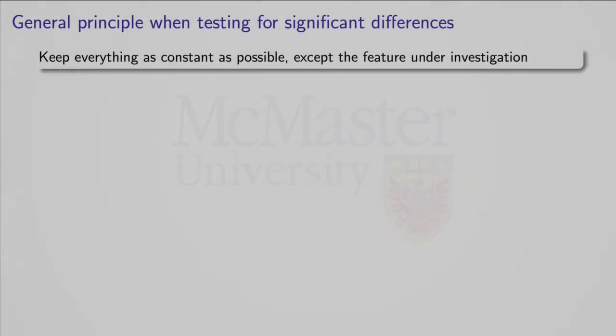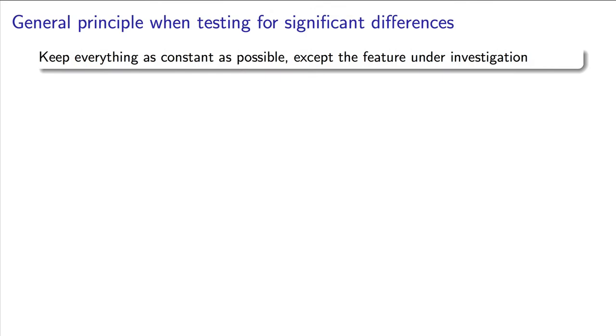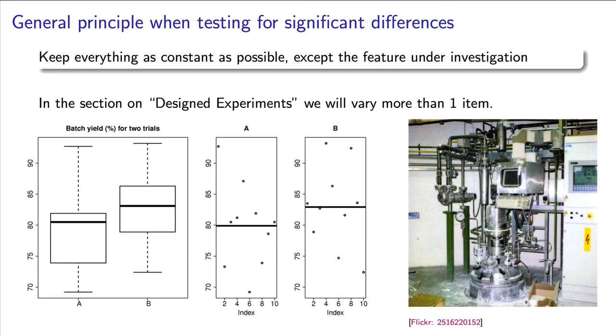When running statistical tests to check for a difference, we always aim to keep everything constant except for the item being changed. Recall the example where we were testing the feedback control system between the existing controller A and the new controller B. We would have kept the materials constant, used the same operator and recipe to operate the batch, and the same analytical methods to analyze the results. If we did not do that, then those other changes might have biased the result.